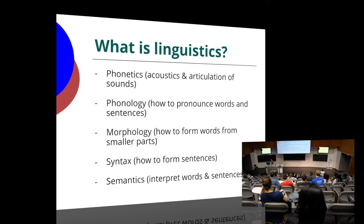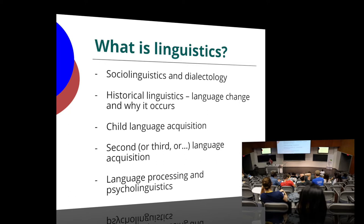So what goes into linguistics? All the different things you think about in language are things we cover within linguistics one way or another. This ranges from theoretical stuff like phonetics — the acoustics and articulation of sounds — phonology, morphology, syntax, and semantics: building from sounds into units of meaning and words, then using those words to build sentences and getting interpretations from those sentences. There's also a lot in applied linguistics: sociolinguistics and dialectology, historical linguistics — language change and why language changes over time — including really interesting stuff about what irregular words we expect to fall out of the language soon.